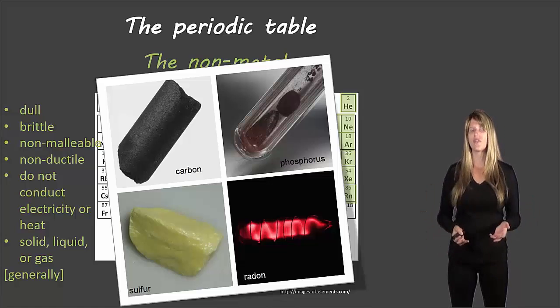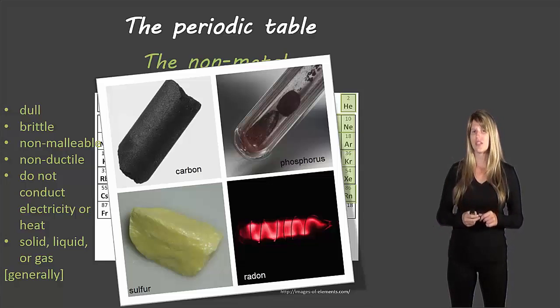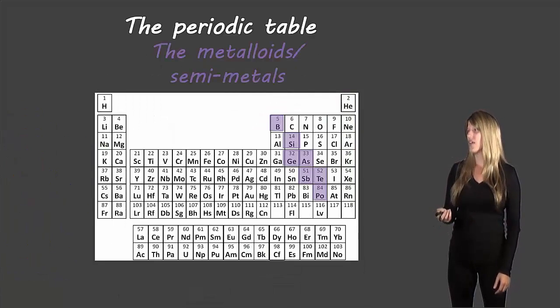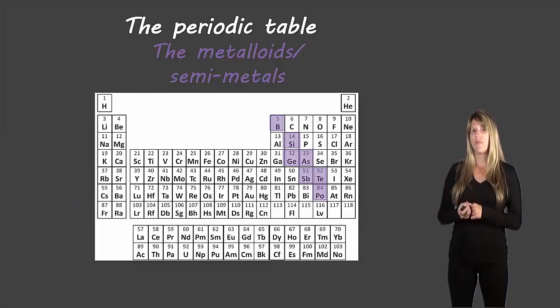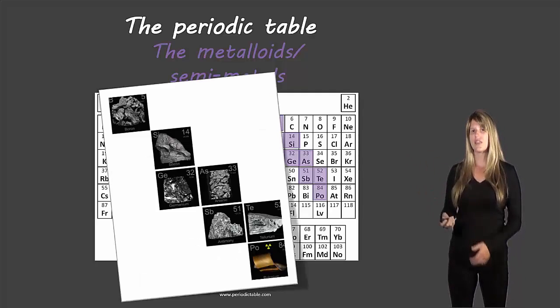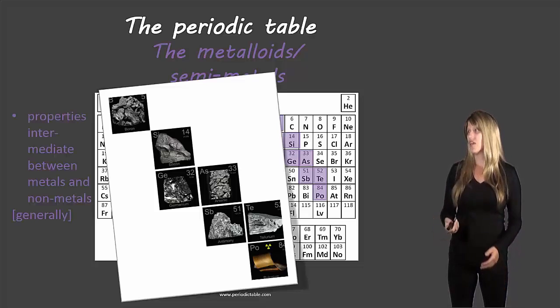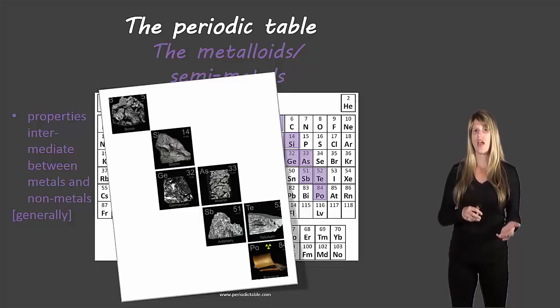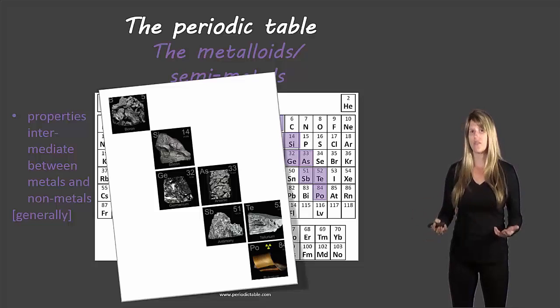These are just generalities - not every single non-metal has every single one of these characteristics. In between the metals and non-metals, we have what we call the metalloids, or sometimes they're referred to as semi-metals. They almost look like they're along a staircase that splits the metals and non-metals. Here are some examples - you can see they all look similar to each other and they do look somewhat similar to the metals. Their properties are intermediate between what we would find for the metals and non-metals. In terms of conducting electricity, they do, but not as well in general.